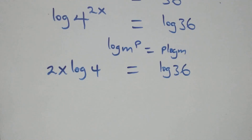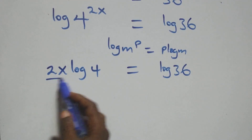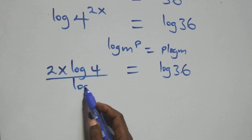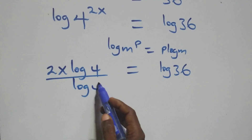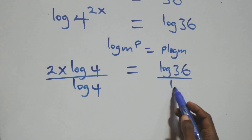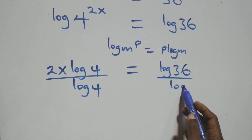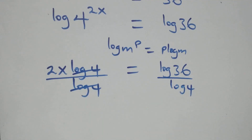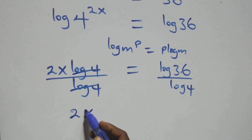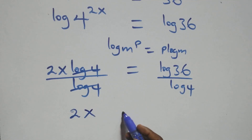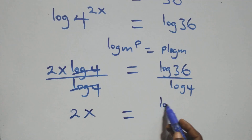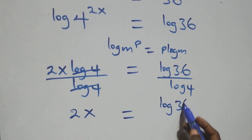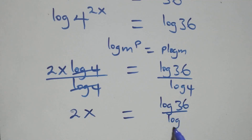The next step: we divide both sides by log 4 — divide this side by log 4, also divide this side by log 4. And the log 4 terms cancel each other, so we have 2x equals log 36 over log 4.